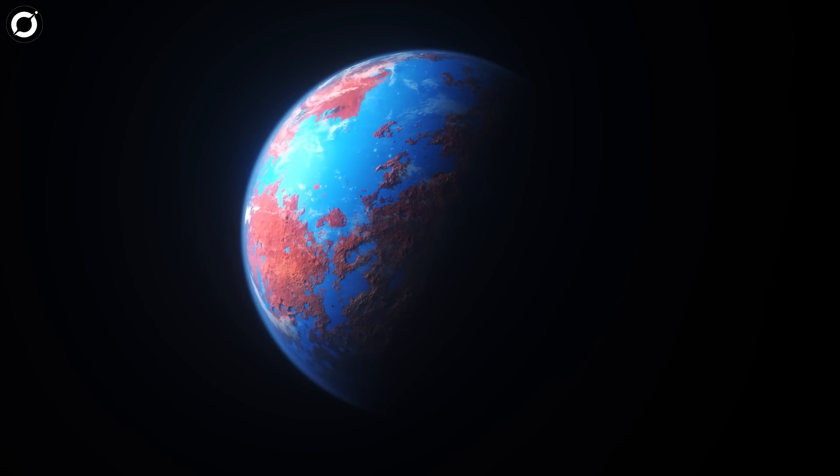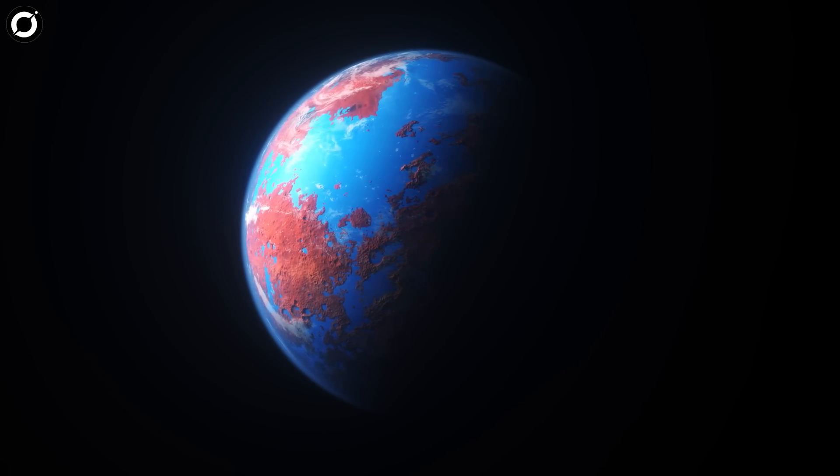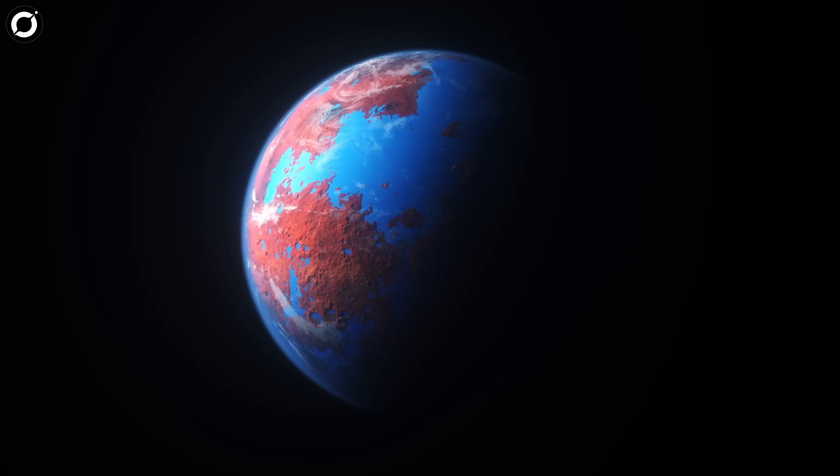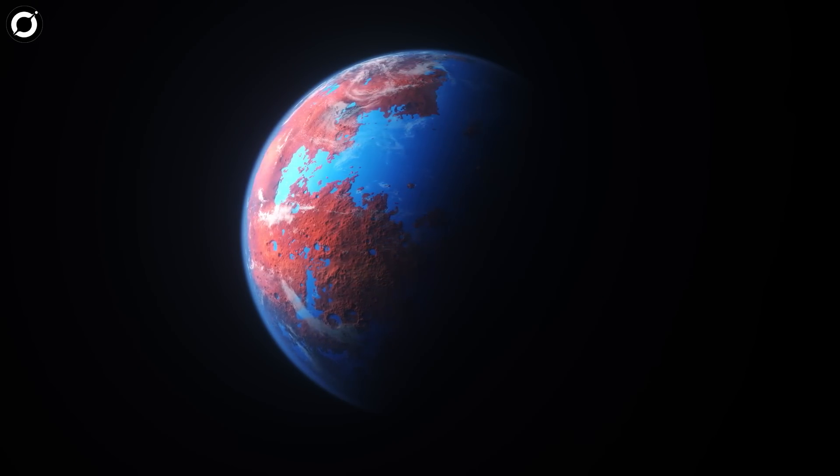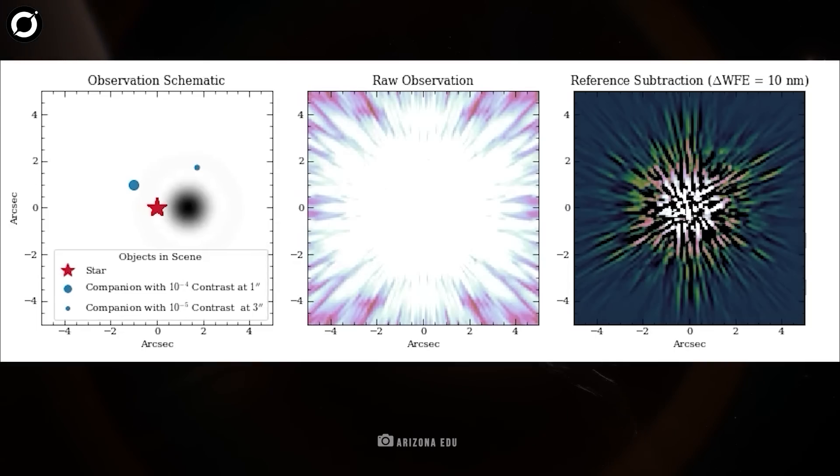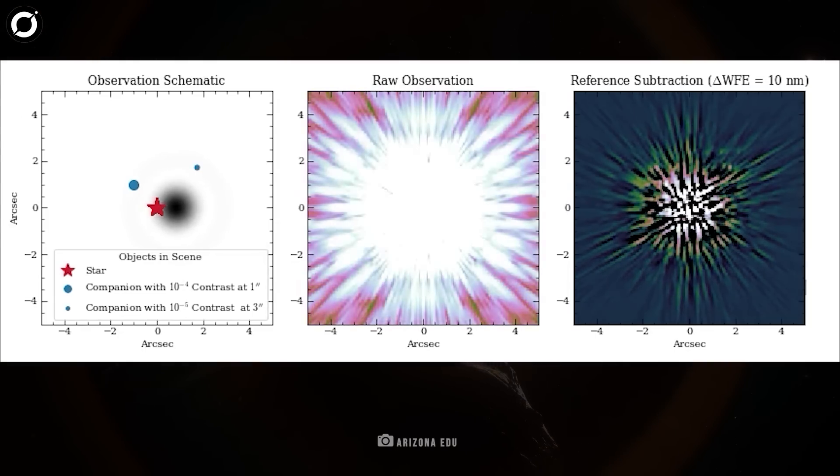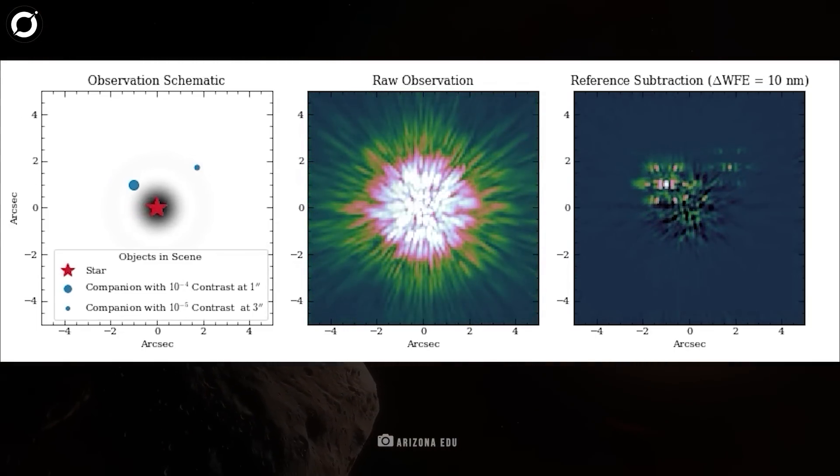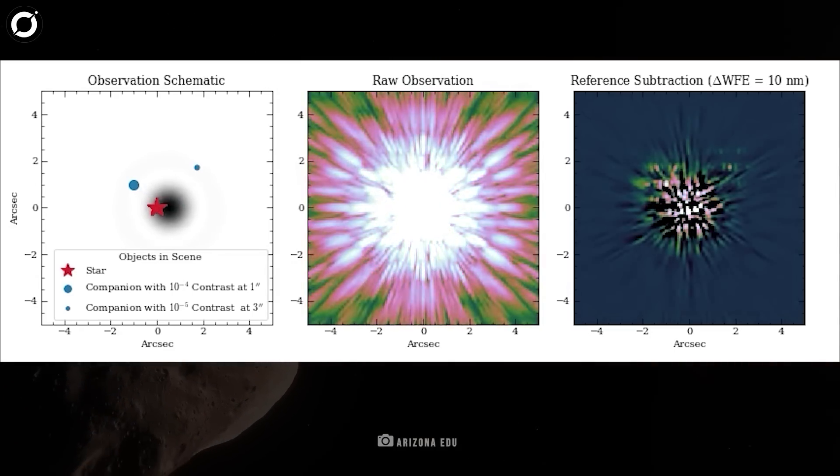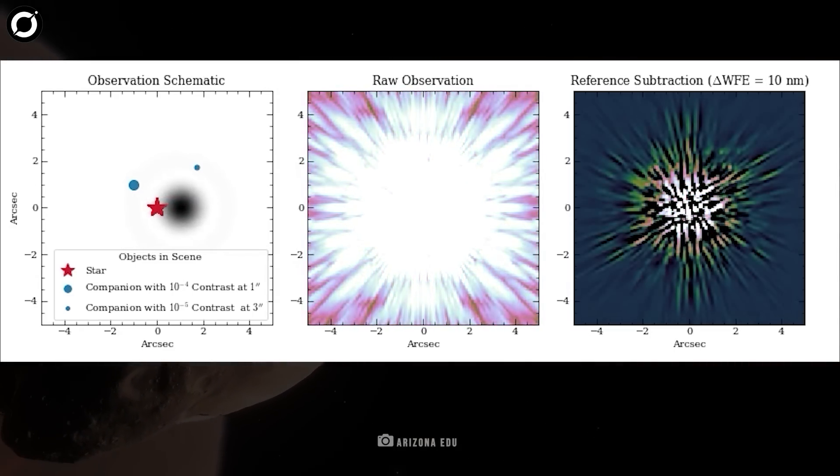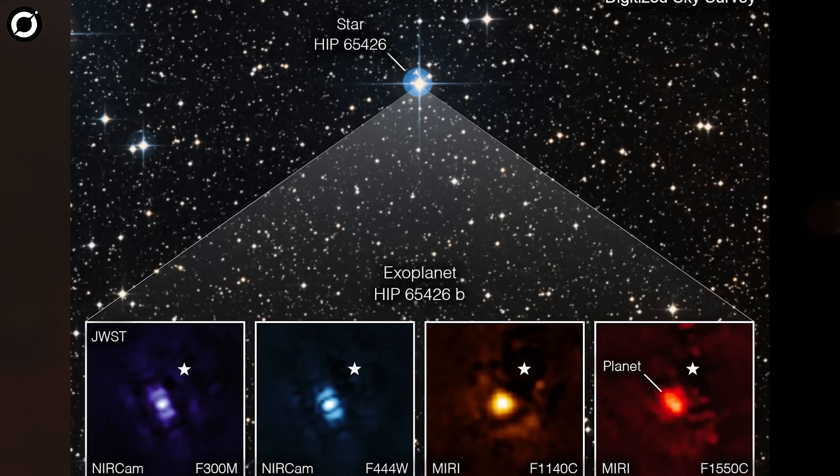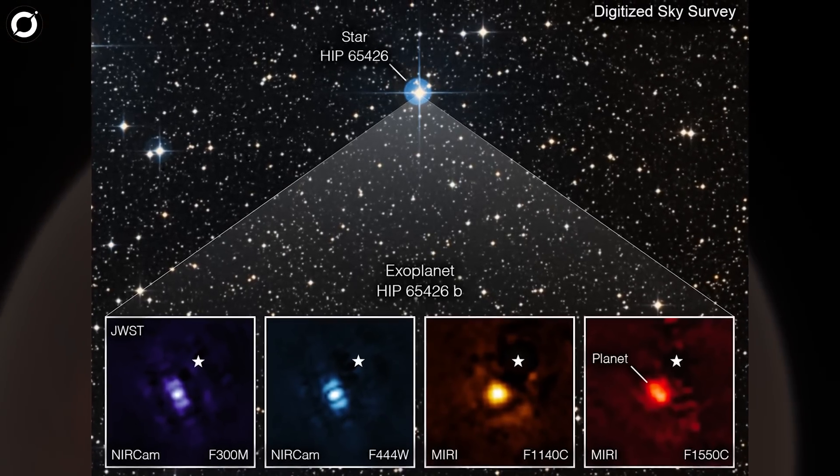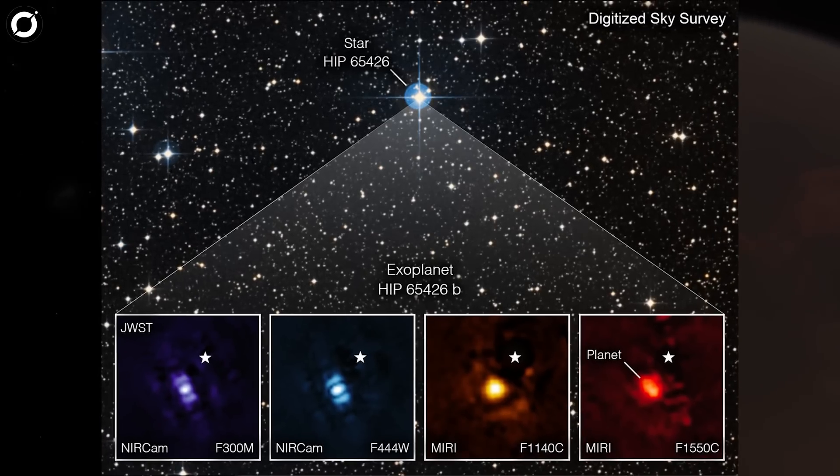The groundbreaking result was the latest in a slew of early exoplanet findings from the telescope and a test of technologies that will enable direct imaging of Earth-like planets by future space telescopes. To photograph the hot young giant HIP 65426 b, JWST blocked the light of its host star using a small mask known as a coronagraph. This revealed the orbiting planet, which was thousands of times fainter, like a firefly around a searchlight.